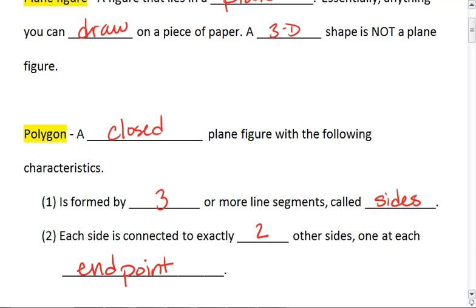One at each endpoint. What this means is I can draw a line segment, and then where that line segment ends, I'll start another line segment. Where that line segment ends, I'll start another line segment, and so on, until I come back to the other endpoint of my first line segment. So notice, any one of these sides is connected to exactly two others, and they're joined at their endpoints.